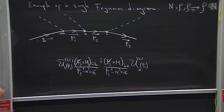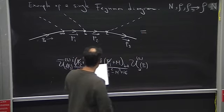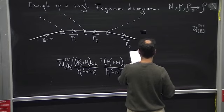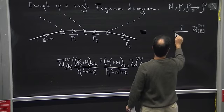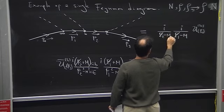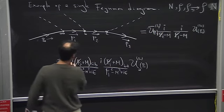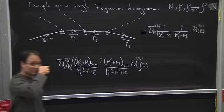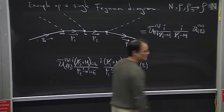Writing it in a nicer way: u(P0, s0) · [i over (P1-slash − M)] · [i over (P2-slash − M)] · u-bar(P3, s3). Here, u(P0) is a four-component column vector, each propagator fraction is a matrix, and u-bar(P3) is a row vector. This compact matrix notation looks much nicer and is what you will see in textbooks.